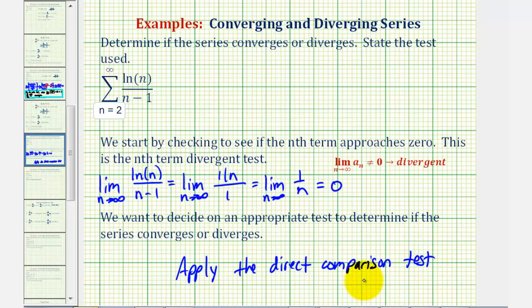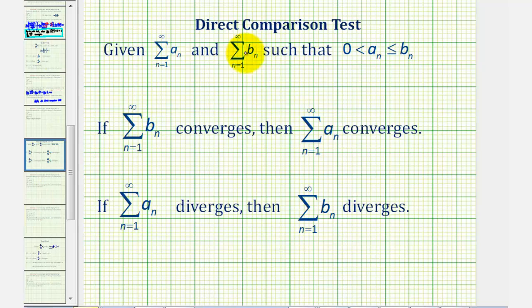Let's review the direct comparison test before we apply it. One of the challenging parts about the direct comparison test is we have to decide what series to compare it to, and also determine whether we want to compare it to a diverging series or a converging series.